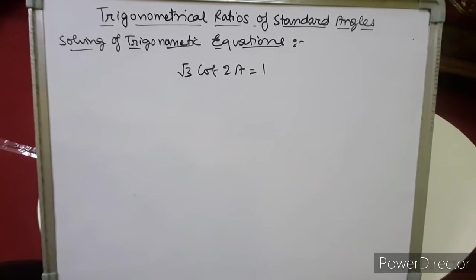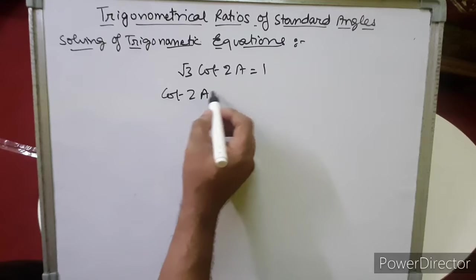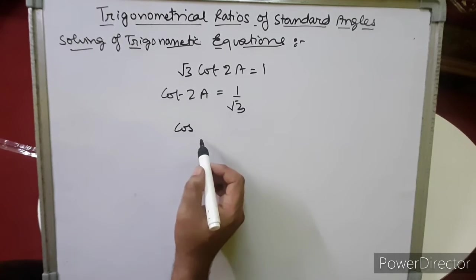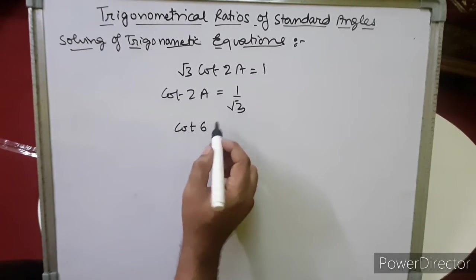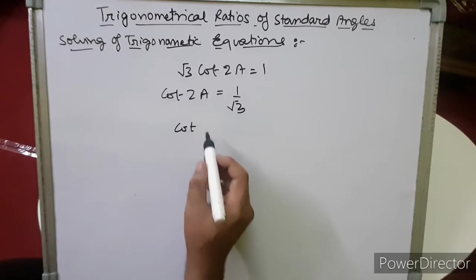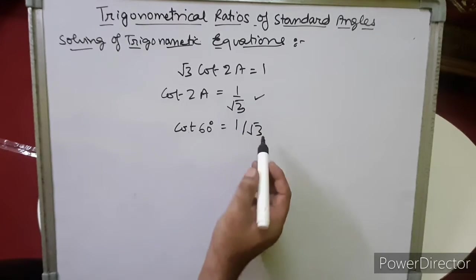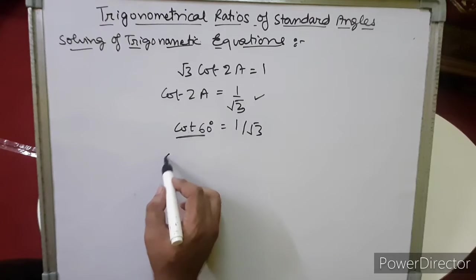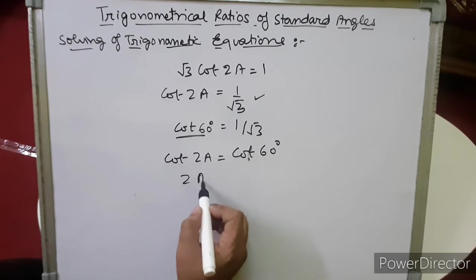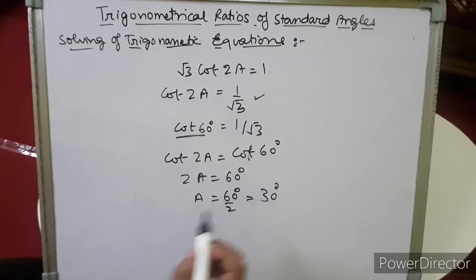Now let's see another sum: √3·cot(2a) = 1. We divide by √3, so cot(2a) = 1/√3. We know that cot 60° = 1/√3, so we write cot 60° in place of 1/√3. By comparing, cot(2a) = cot 60°, so 2a = 60°, giving a = 30°.